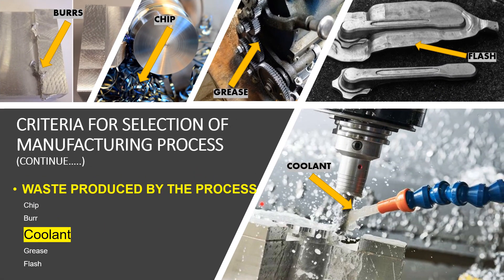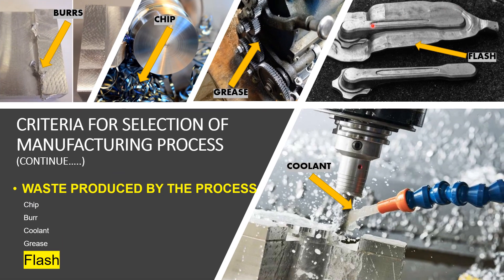Plenty of coolant is needed during high-speed machining, and it cannot be re-circulated without a filtration process. After many uses, coolant must be disposed of as industrial waste. Grease is used as a lubricant on mechanical parts and must be applied on all joints and mechanisms, incurring cost during machine maintenance. In the forging process, flashes are produced that are not part of the design and must be removed, becoming waste. This shows the product before and after the grinding and cutting process.